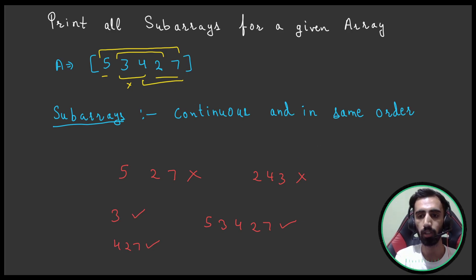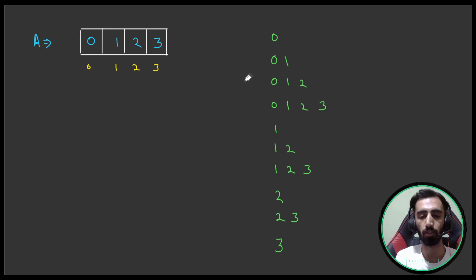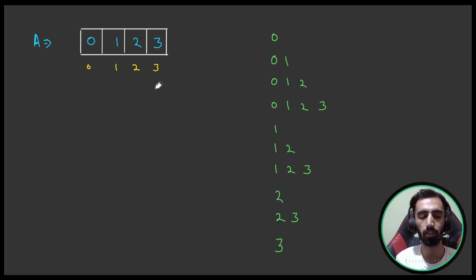Now let's say we have an array where I'm taking the same values as the indexes: 0, 1, 2, 3. What are all the possible subarrays? They are: [0], [0,1], [0,1,2], [0,1,2,3], [1], [1,2], [1,2,3], [2], [2,3], and [3]. So all of these are the subarrays for the given array.